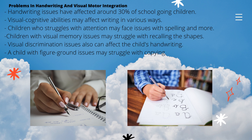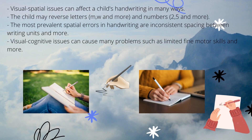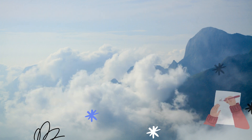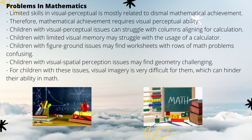Visual discrimination issues can also affect the child's handwriting. The child may struggle to recognize letters in different print types and therefore may struggle to copy from different types of print to handwriting. A child with figure-ground issues may struggle with copying because he or she is unable to determine what is written, and hence may omit the most important part. Visual spatial issues can affect the child's handwriting — the child may reverse letters such as M and W, and numbers such as 2 and 5. The most prevalent spatial errors in handwriting are inconsistent spacing between writing units — the gap may be too big, too small, or irregular. Visual cognitive issues can also cause limited fine motor skills.